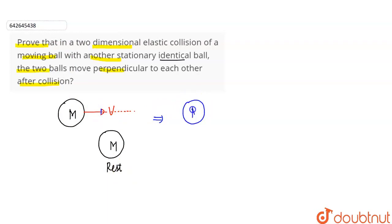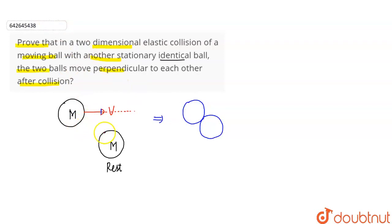So this was the first body, and the second body was placed below it. The collision happens at this point. The surface at which both bodies collide — the perpendicular drawn to that surface at the collision point — that line is called the line of impact. In two-dimensional collision, the line of motion and the line of impact are different — they are separate from each other.